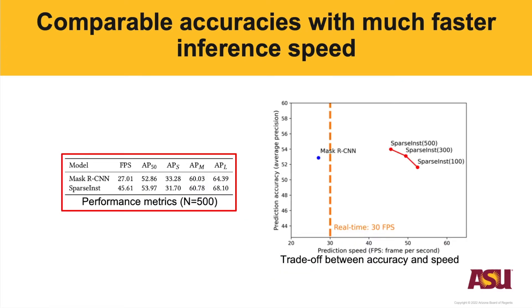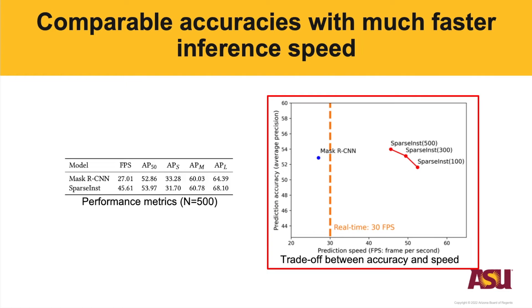As the performance metrics show, Sparse Inst achieves slightly better accuracy with much faster inference speed. On the right-hand side, since the number of predictions is a hyperparameter for Sparse Inst, we ran an experiment comparing different numbers of candidates against their corresponding accuracy and speed. As the figure shows, the higher the number of candidates, the slower the model, but it can also achieve higher accuracy. Both the 500-candidate and 300-candidate models have better accuracy than Mask RCNN.